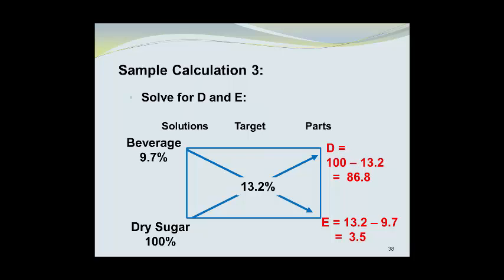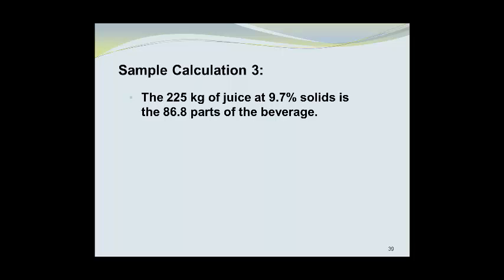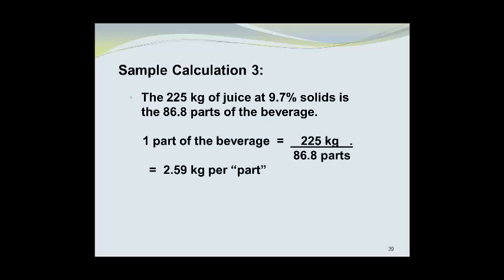The 225 kilograms of the juice at 9.7% solids accounts for the 86.8 parts of the beverage. So one part of the beverage is 225 kilograms divided by 86.8 parts, which equals 2.59 kilograms per part. Now we need 3.5 parts of sugar, so that's going to be equal to 3.5 parts of sugar times 2.59 kilograms for each part, which means that we need to add 9.07 kilograms of dry sugar crystals.